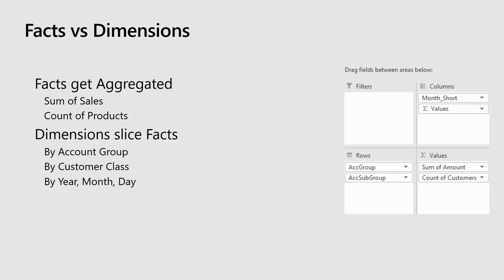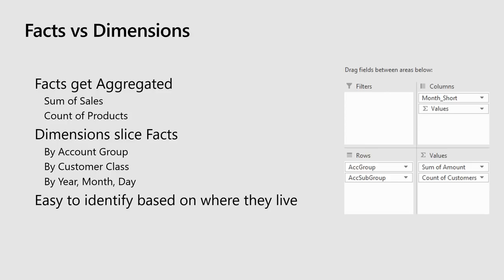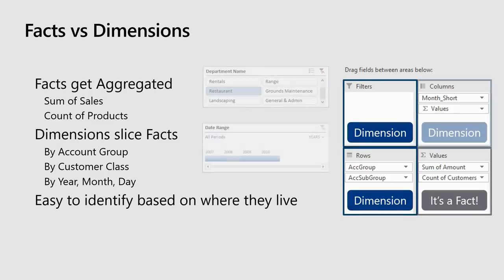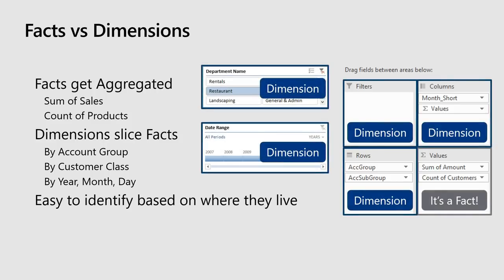The dimension is all about how the facts are actually sliced up — by account group, by customer class, by year, month, or day. How do you identify which are which when you're looking at the pivot table? The answer is actually super easy. It's all based on where they live inside this diagram. Facts live in the bottom right-hand corner — if it lives there, it's a fact. If it doesn't, it's a dimension.